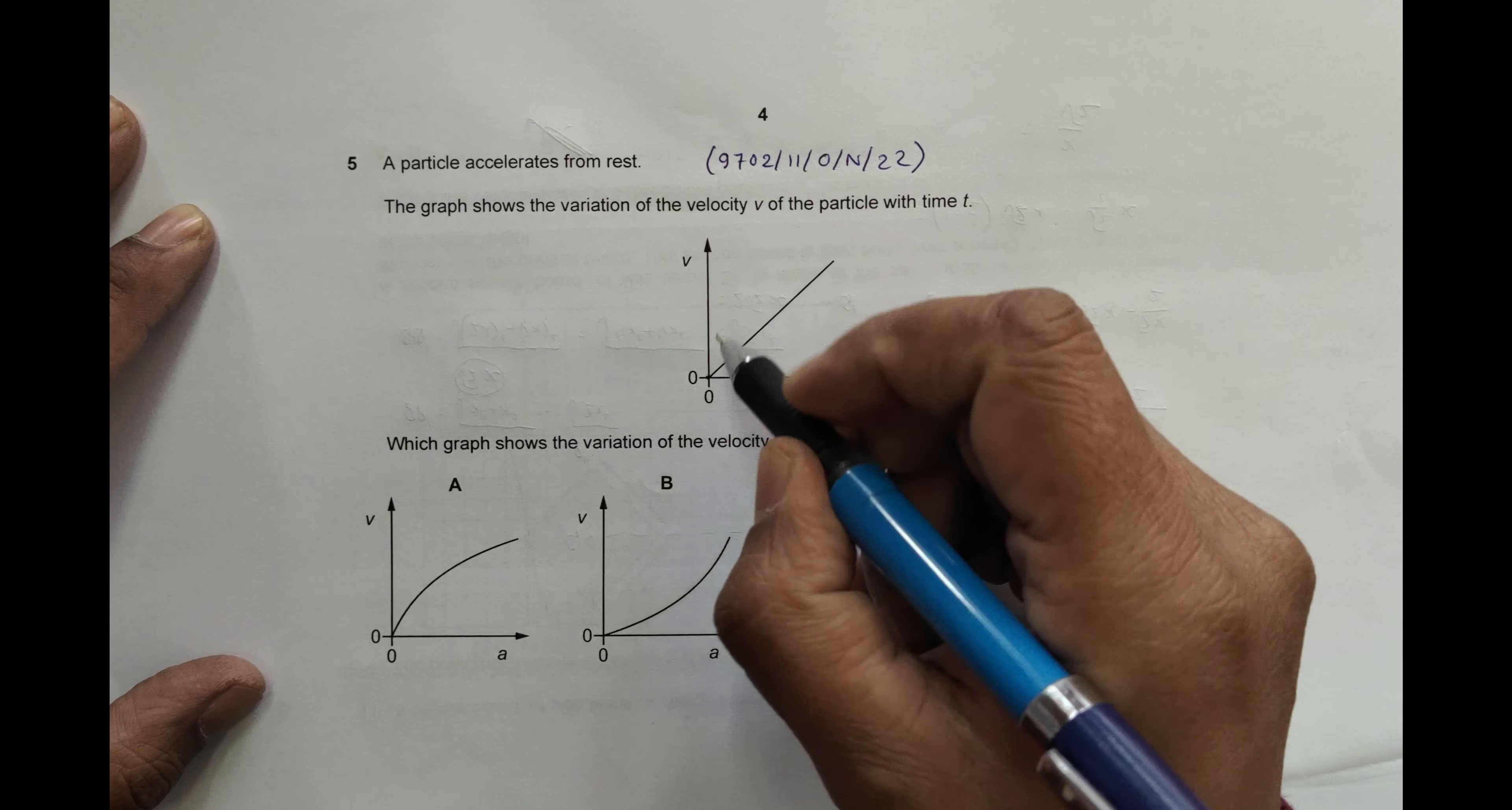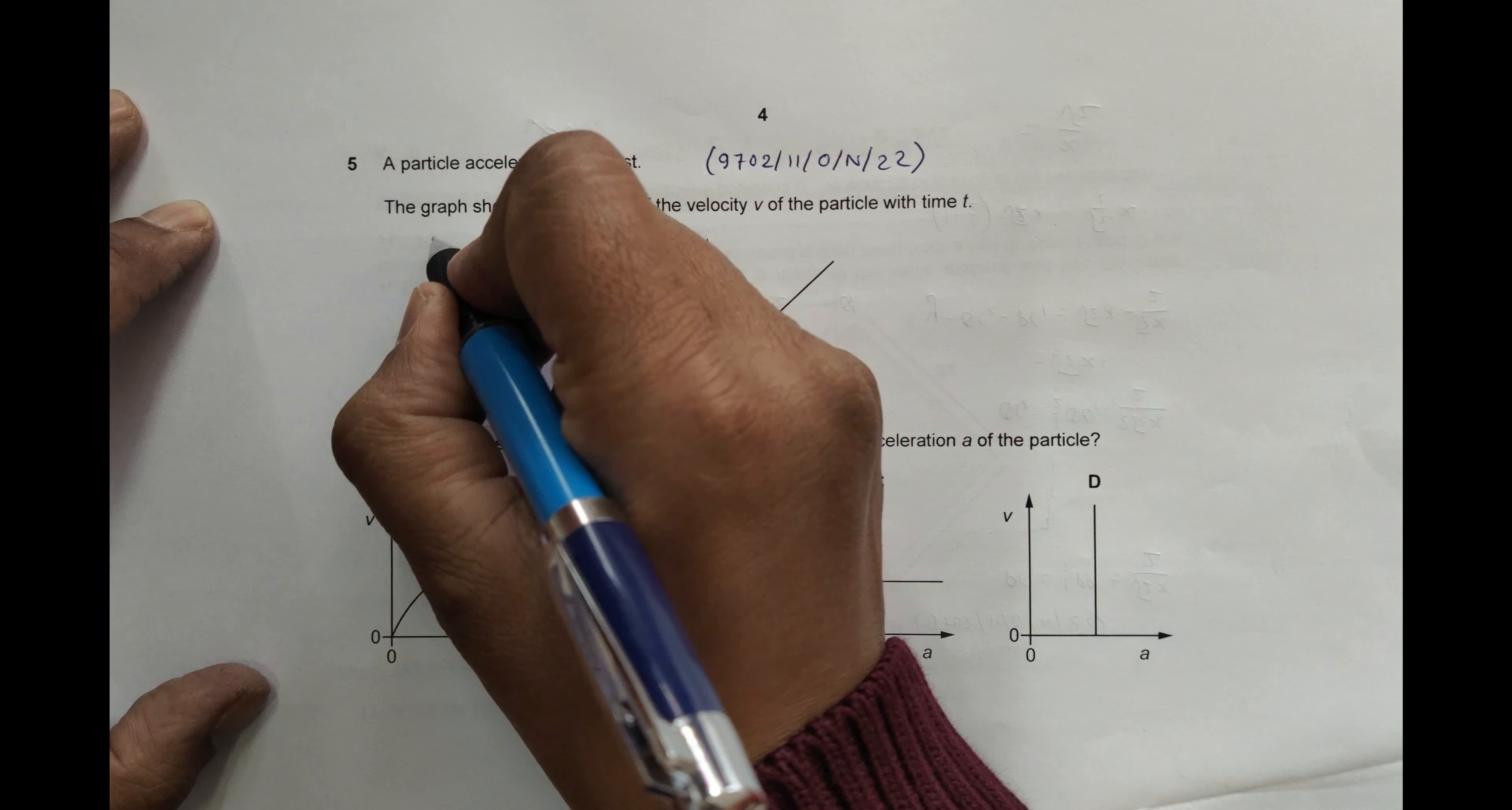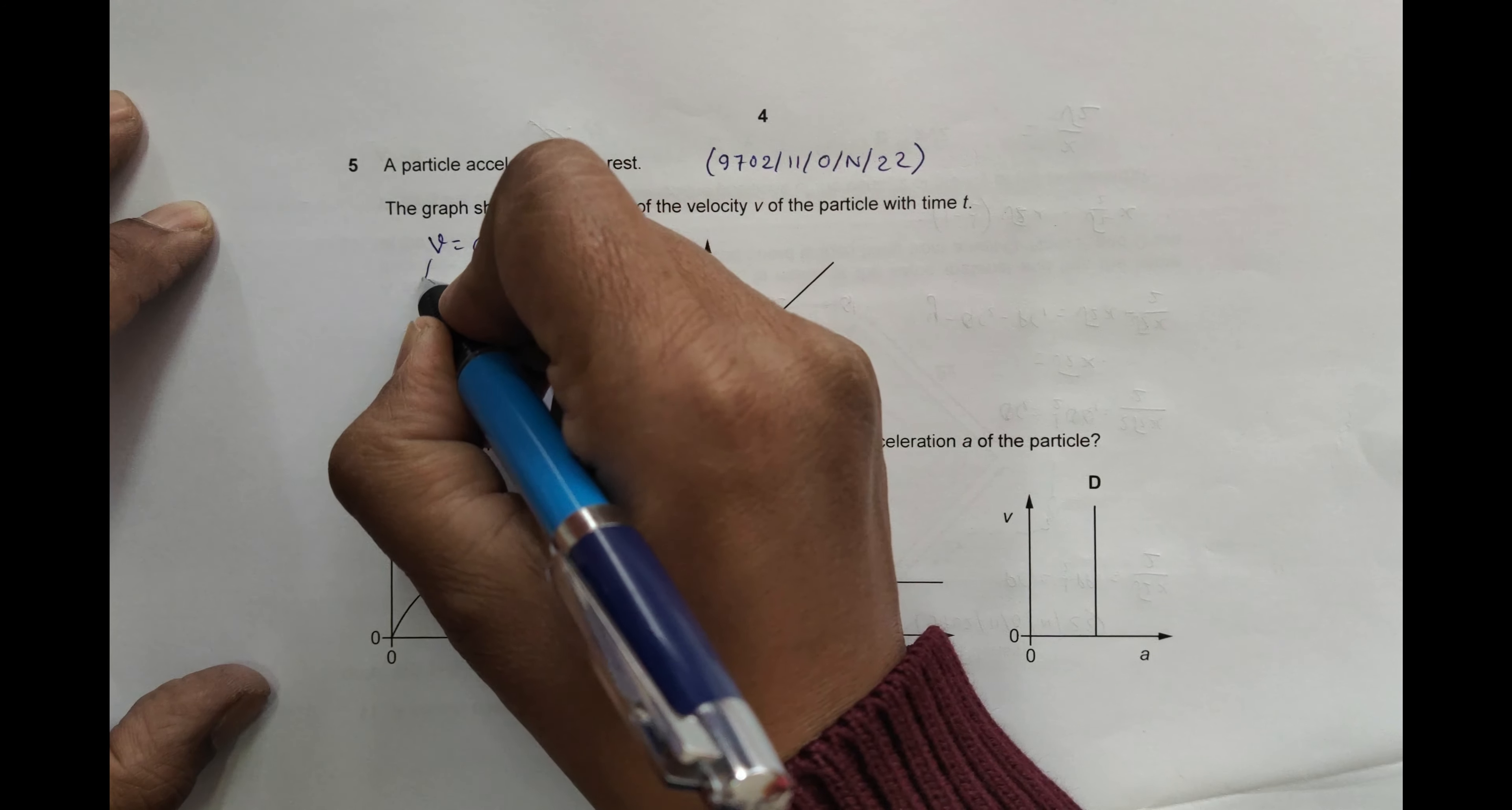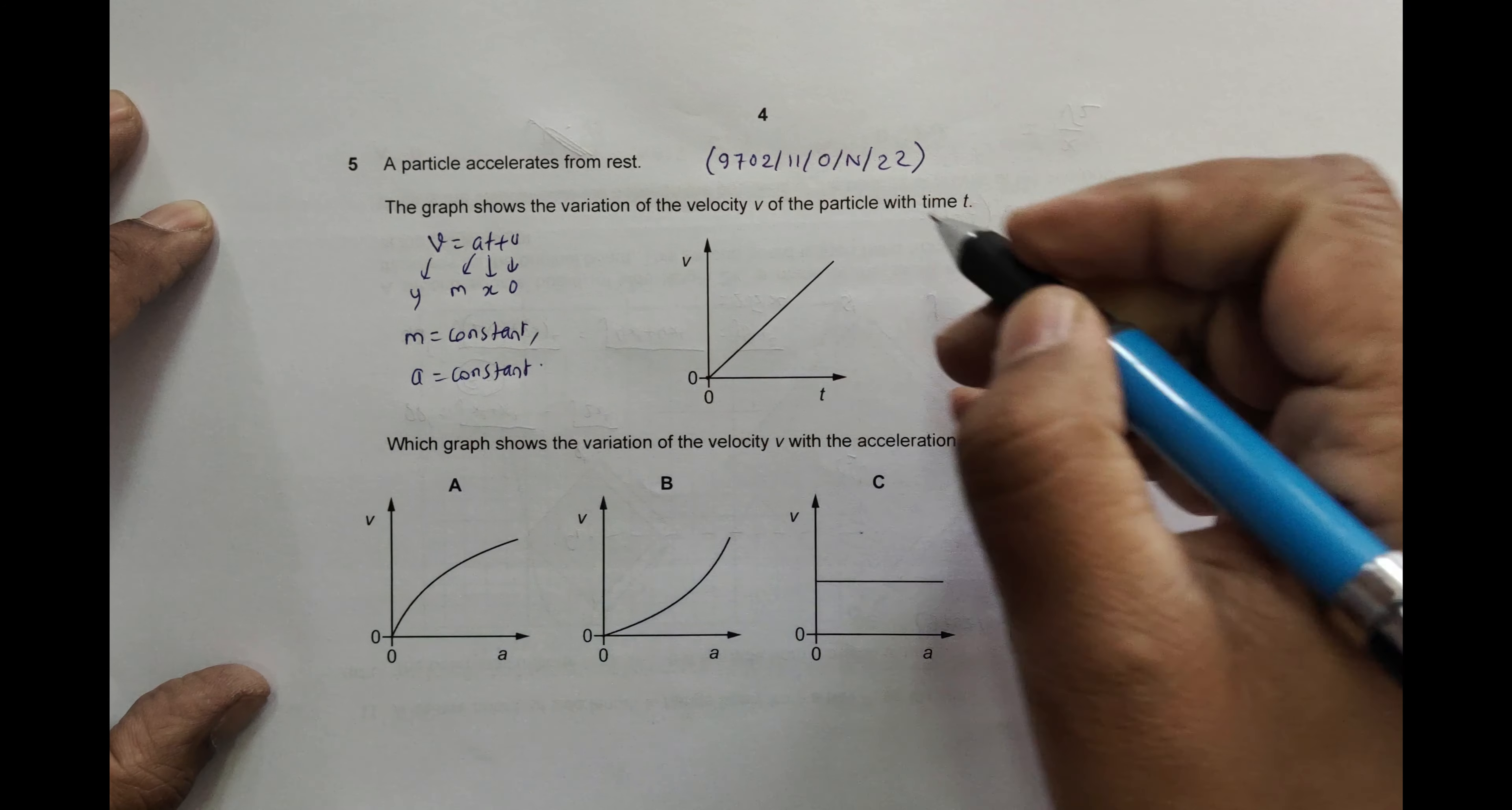The graph shows the variation of V. As I can see here, there's a straight line, which means the slope is constant, the gradient is constant. In the graph of V = at + u, we have u = 0. T is on the x-axis, V is on the y-axis, and this is the slope. The slope is constant, which means I must have a = constant.